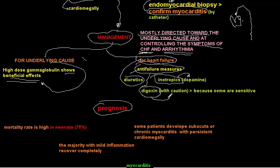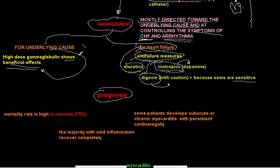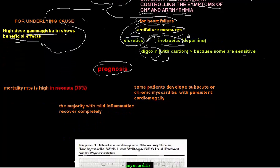Patients with myocarditis may have great sensitivity to digoxin, so it must be used with great caution. Treat heart failure with diuretics, inotropes, and other anti-failure measures. For the underlying cause, treat infections if diagnosed and use gamma globulin.